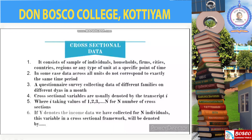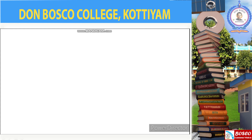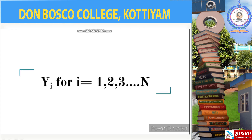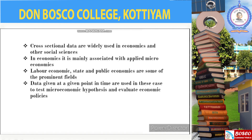For example, if y denotes the income data collected for N individuals, this variable in a cross-sectional framework will be denoted as y_i for i equal to 1, 2, 3, up to N, because we have N number of individuals. Cross-sectional data are widely used in economics and other social sciences, and in economics the analysis of cross-sectional data is associated mainly with applied microeconomics.